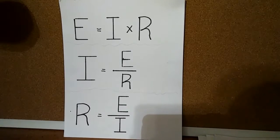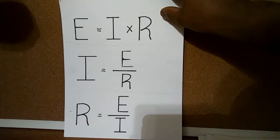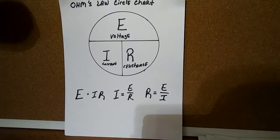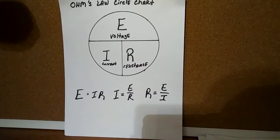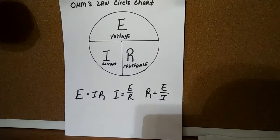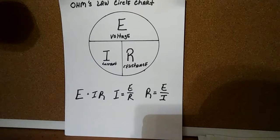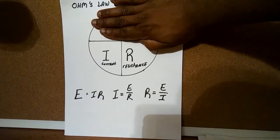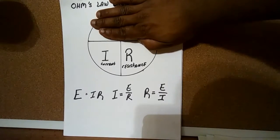So let's take a look at an actual Ohm's Law circle chart. The way the Ohm's Law circle chart works is you're given two knowns. Maybe you're given I and R, and E is your unknown. So what you do in the Ohm's Law circle chart is you cover the unknown. In this case your unknown would be E. So you're given a value for I and a value for R, but you don't know what E is, so you cover E.